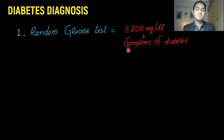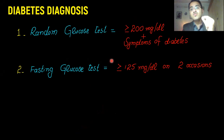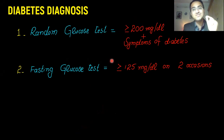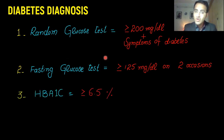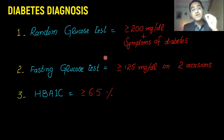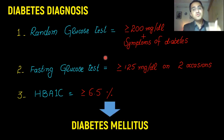Or if the fasting blood glucose test is greater than or equal to 125 milligram per deciliter on at least two separate occasions, the patient will be labeled as a diabetic patient. Or if glycosylated hemoglobin HbA1c is greater than or equal to 6.5 percent, the patient will be labeled as a diabetic patient.